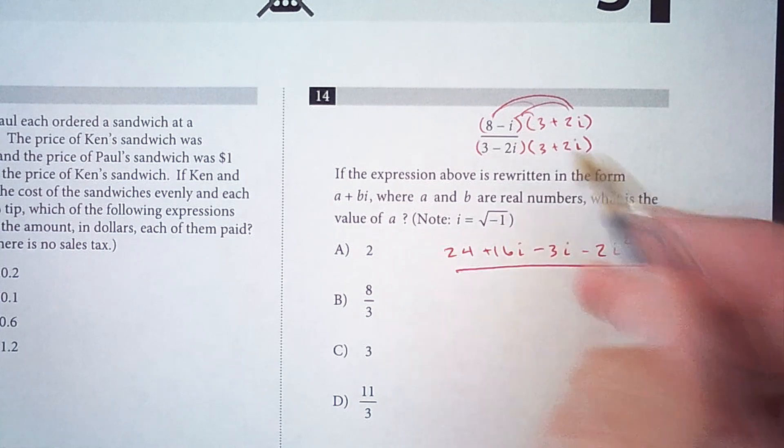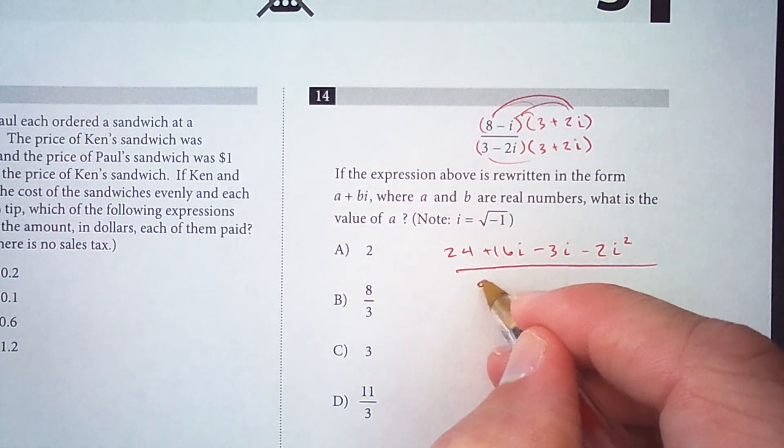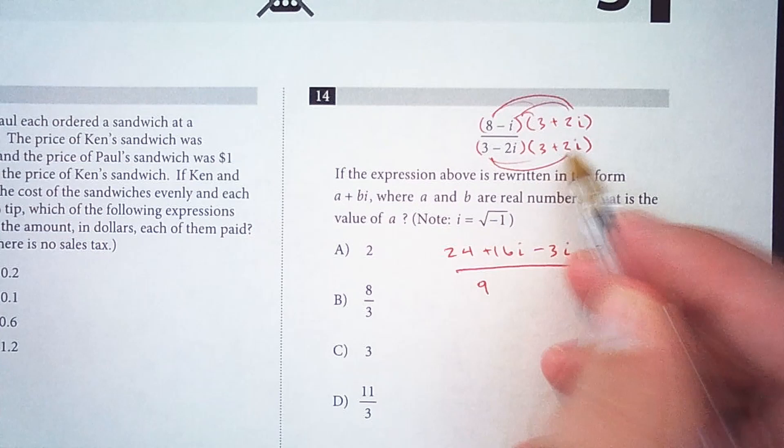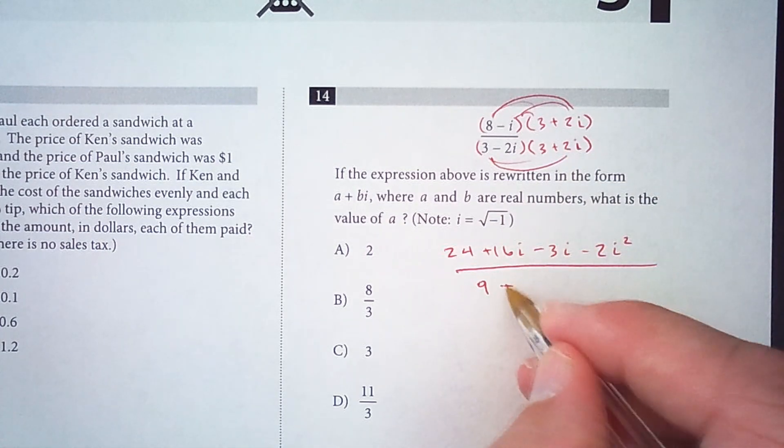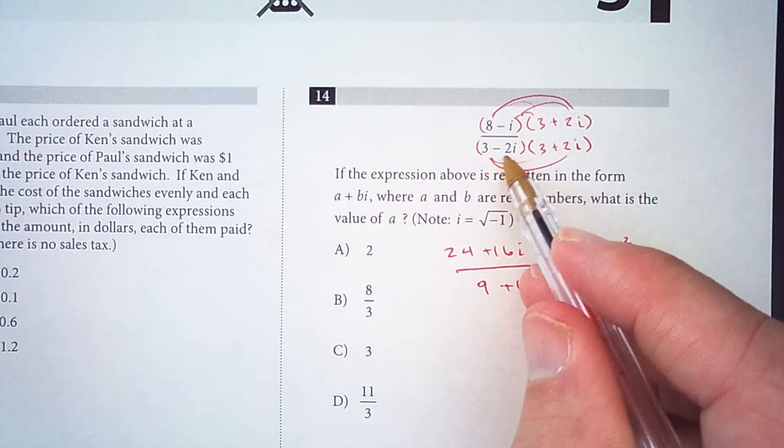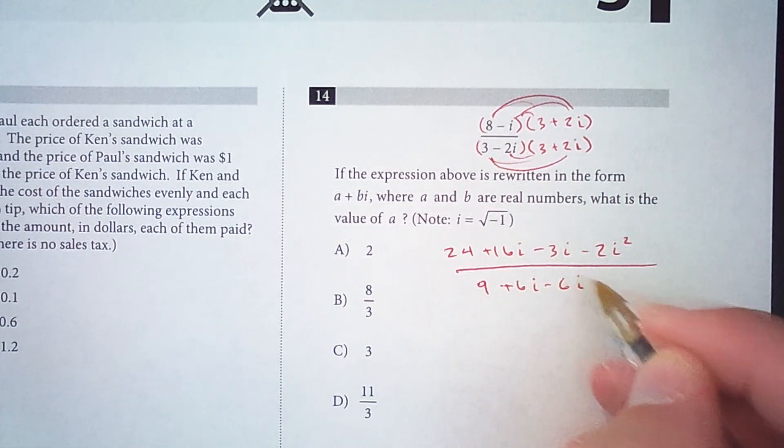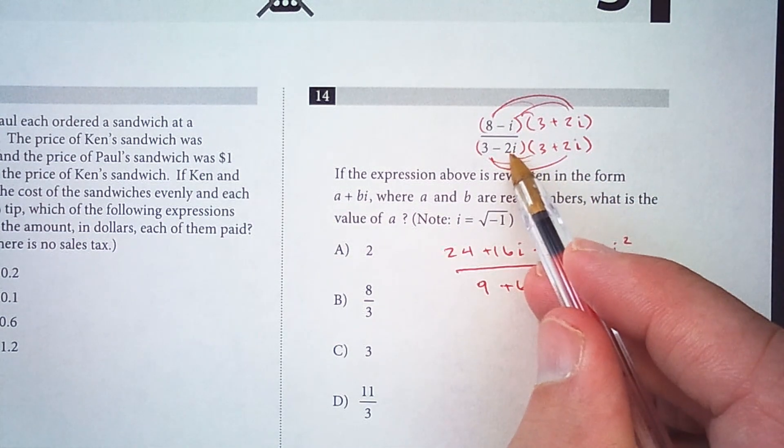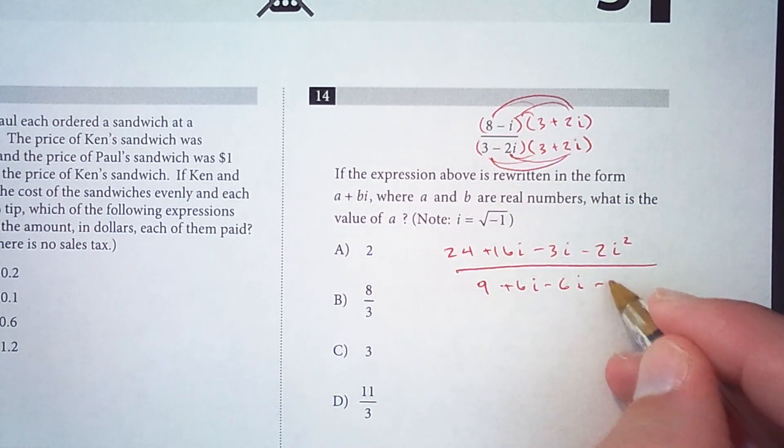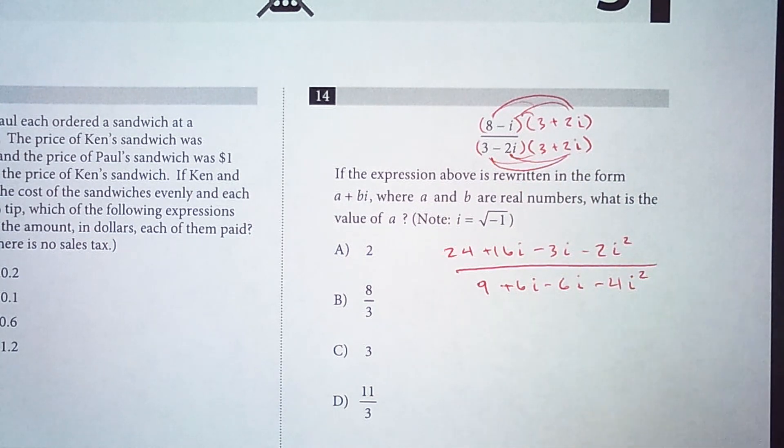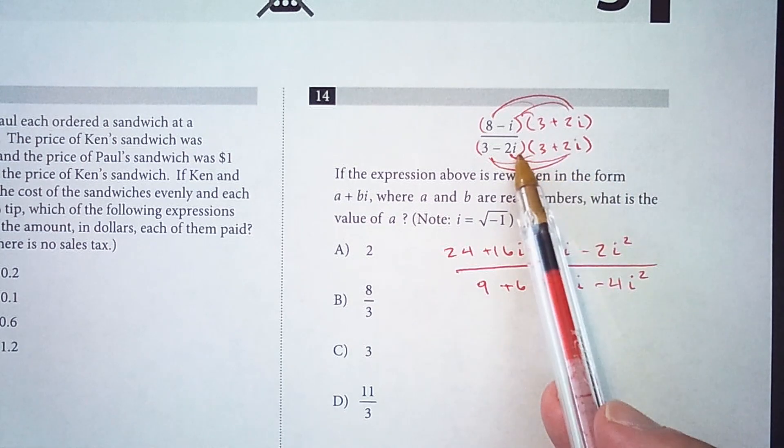In the denominator we have 3 times 3, 3 times 2i so that's plus 6i, negative 2i times 3 is negative 6i, and then negative 2i times positive 2i is negative 4i squared.